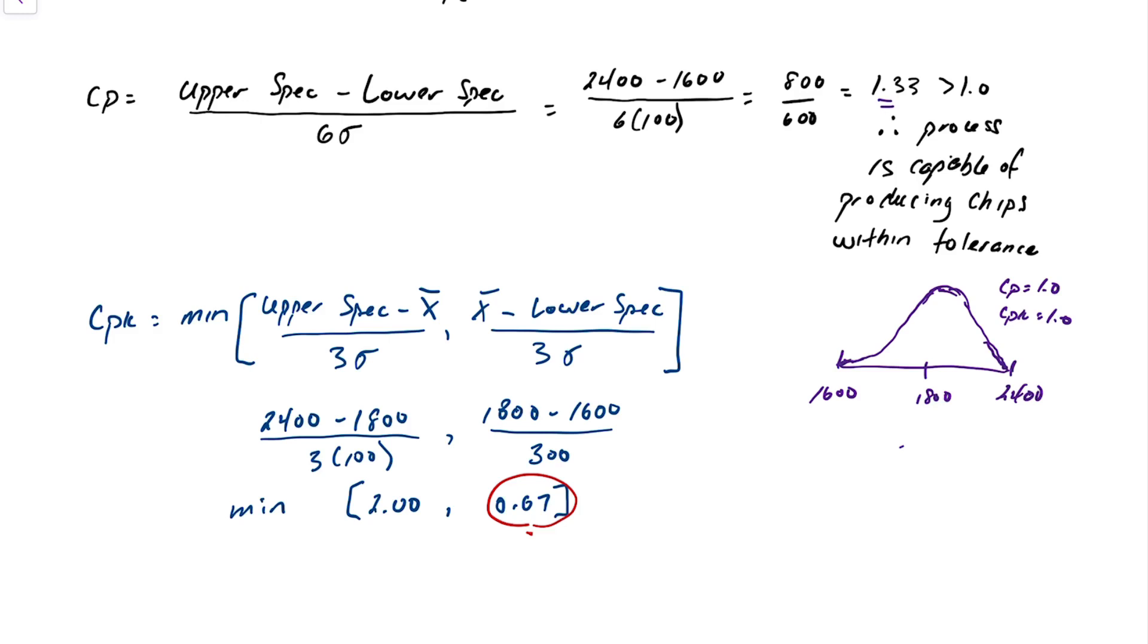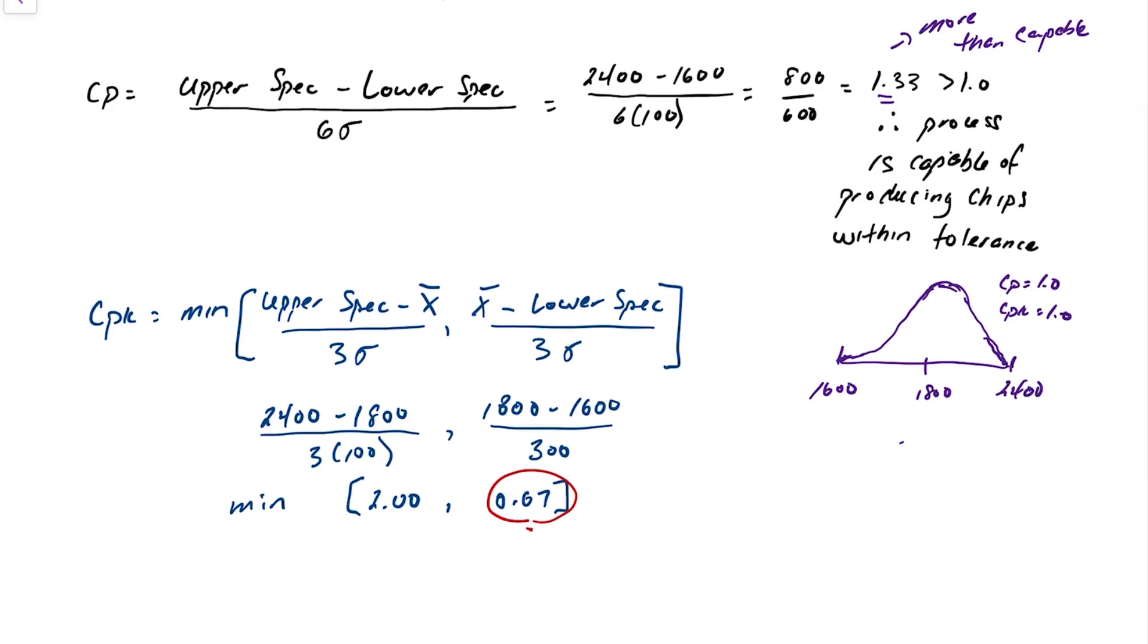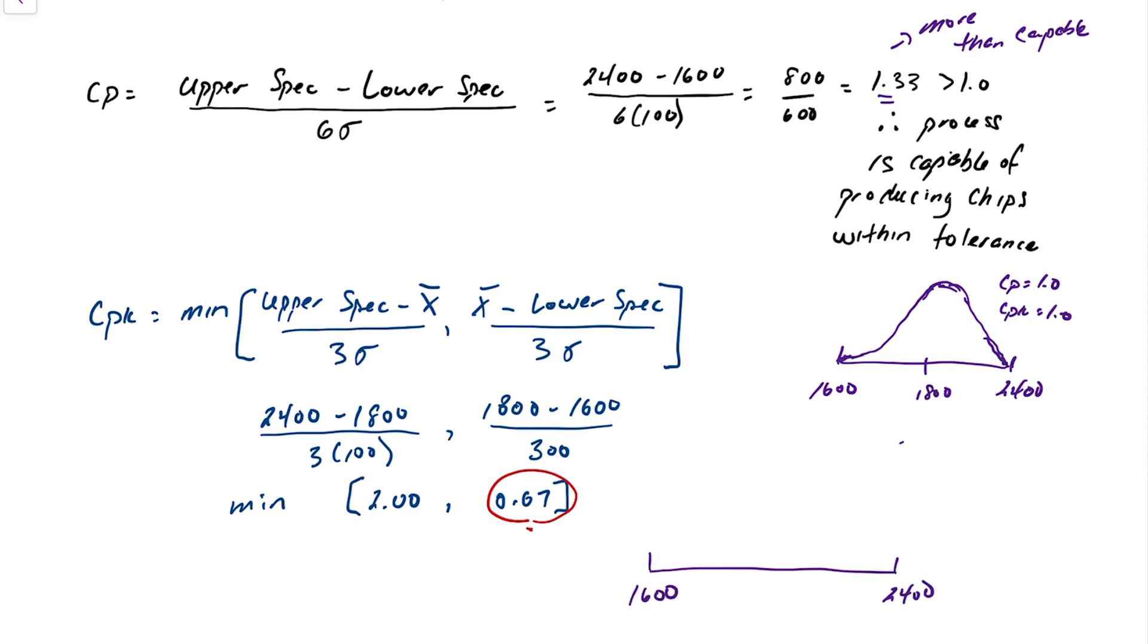A CP of 1.33 is actually more than capable. But in terms of it producing exactly around the mean, the CPK, the process capability index tells us that's not the case. So if we were to draw what this looks like with a CPK of 0.67, it means that our actual output is sort of looking like something like this. This is not drawn to scale or anything, but you see with a mean of 1800 something like that.